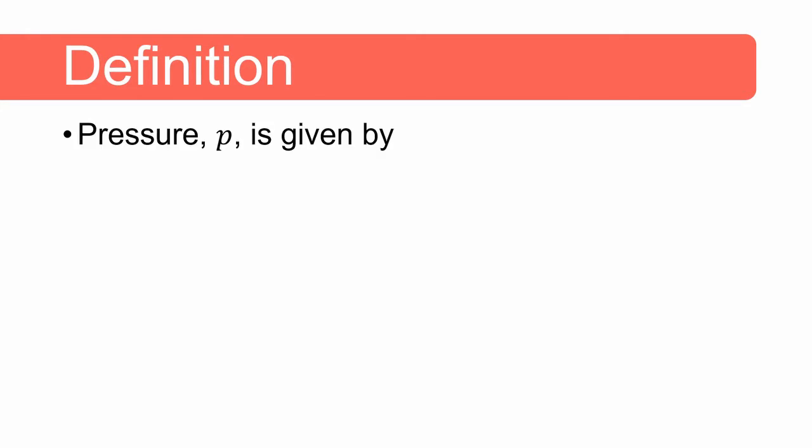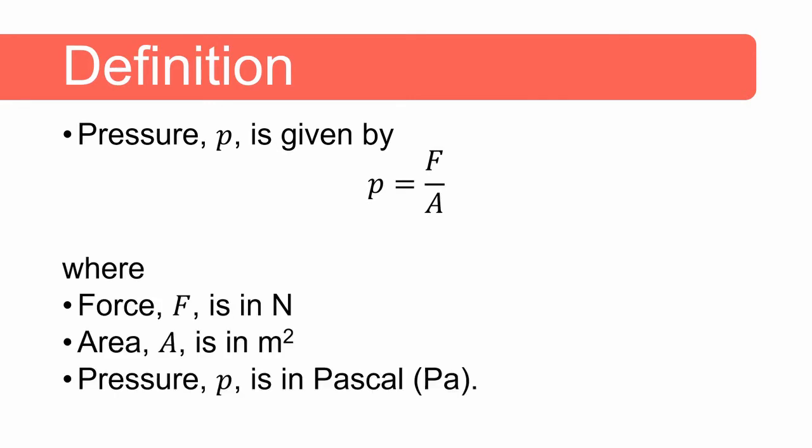So what is the definition of pressure? Pressure is defined as P and is given by the equation P equals F divided by A where F is the force in newtons, A is the area in meters squared and the units of pressure is given in Pascal.